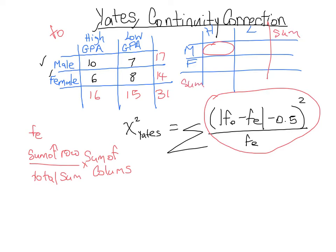Let's put the sums in so we know what they are. They're the same as they were in the other table, so our sums were 17, 14, 31, 16, and 15—those are the sums we just calculated over here.